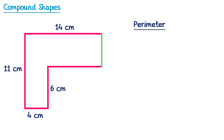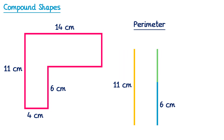Let's start with this side here — it's a vertical line. To find its length we look at the other vertical lines on the shape. This vertical line is 11 centimeters and this one is 6 centimeters. If I imagine bringing the green side across so that it lines up with the blue side, the total length of the blue and green sides must equal the orange side. So I can work out the green side by subtracting 6 from 11, which gives 5. The green side is 5 centimeters.